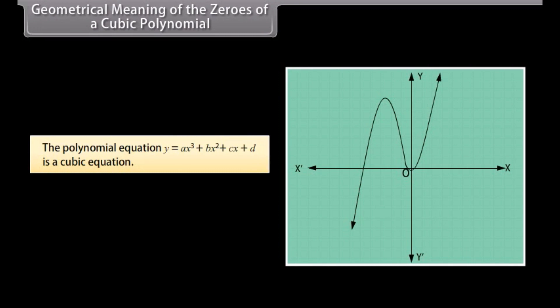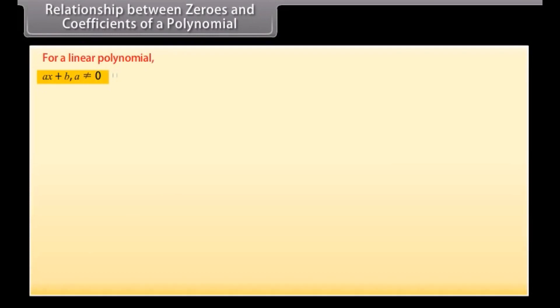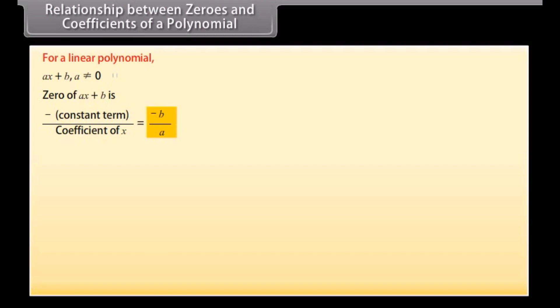For a linear polynomial ax plus b, where a is not equal to zero, the zero of ax plus b is minus constant term upon coefficient of x, which equals minus b upon a. For example, the zero of 2x plus 3 is minus 3 upon 2.